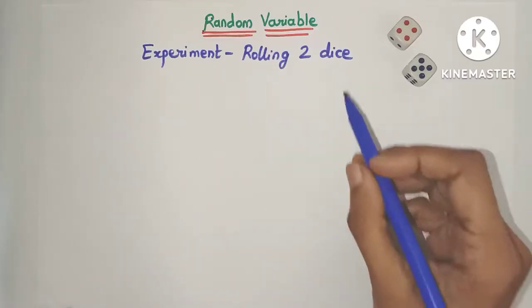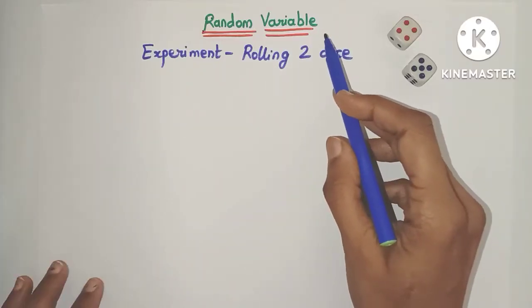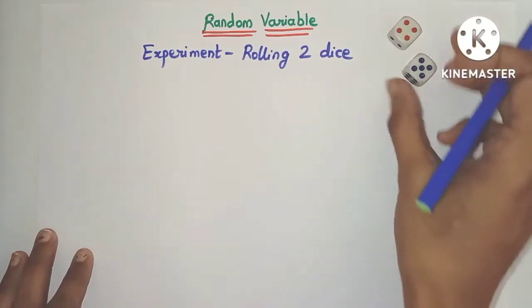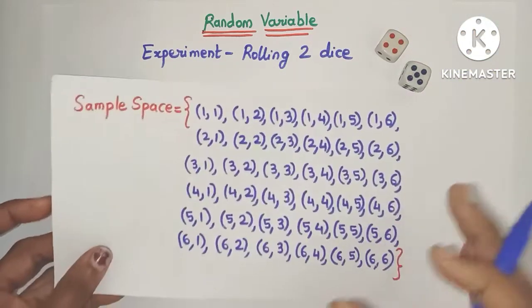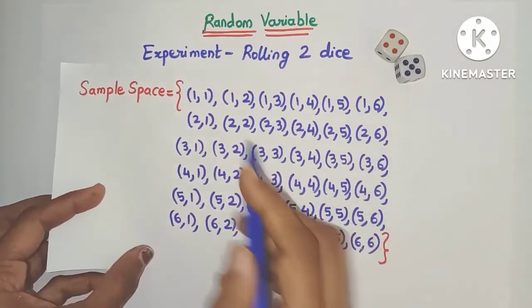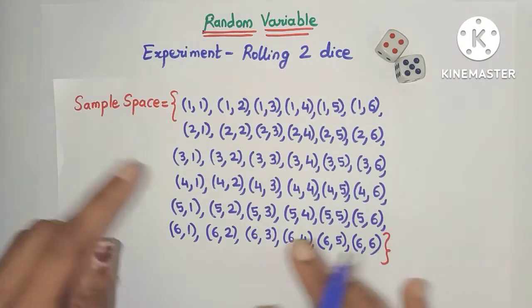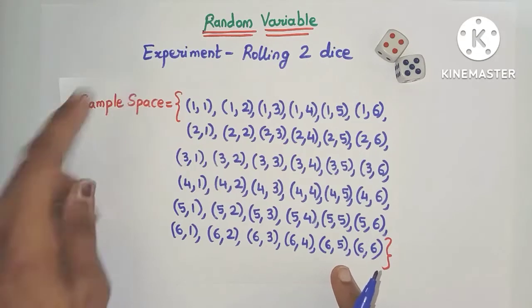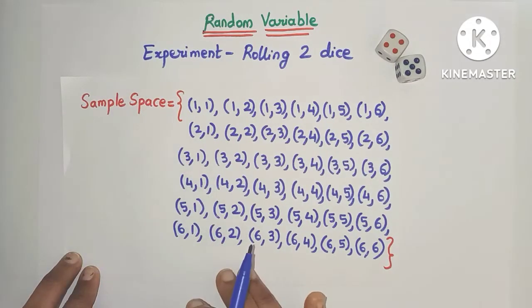Hello everyone. Today let's learn what are random variables. Let's consider this experiment where we are rolling two dice. The outcome will be a pair of numbers between one and six. The set of all the outcomes of this experiment is known as the sample space of the experiment.